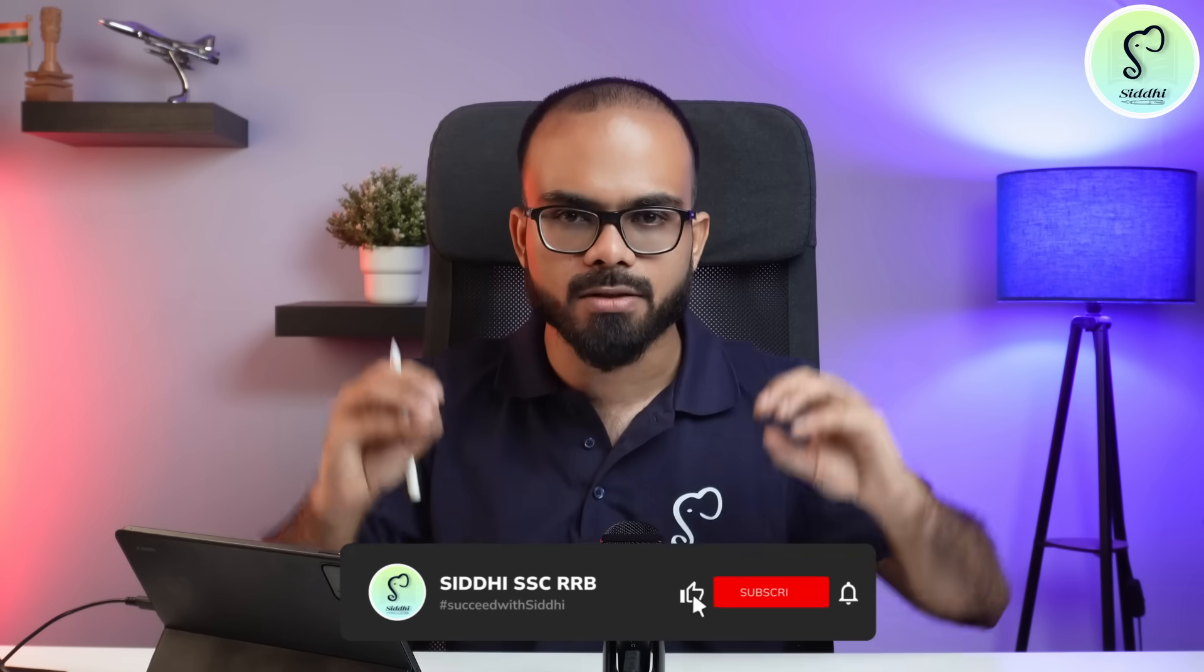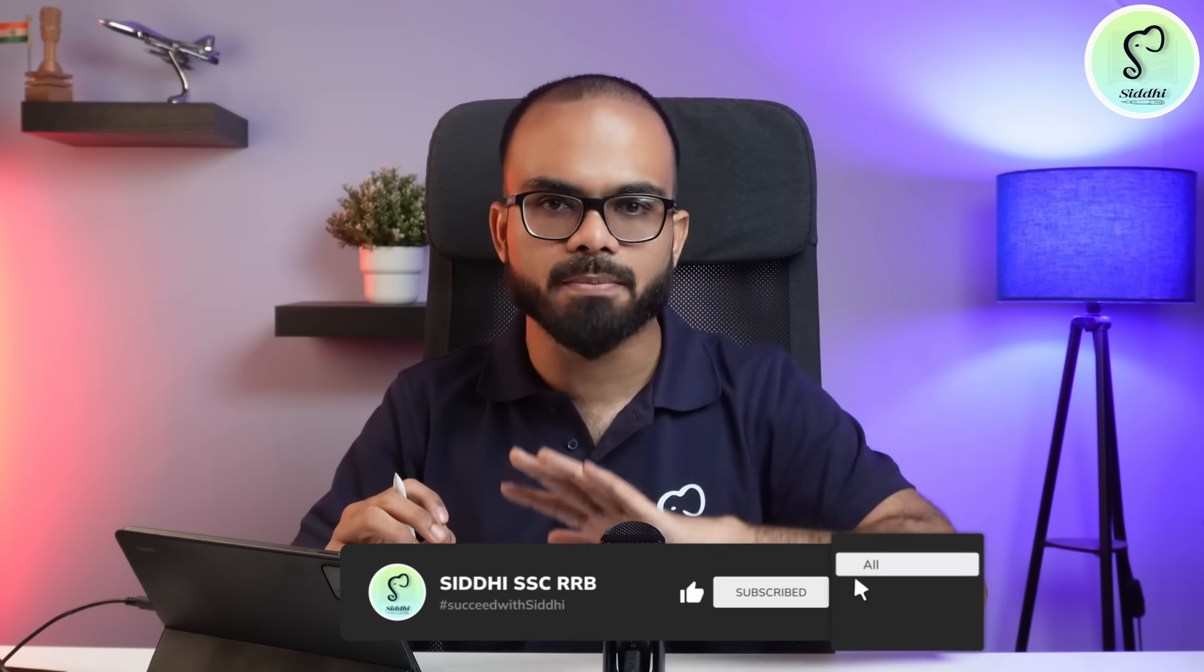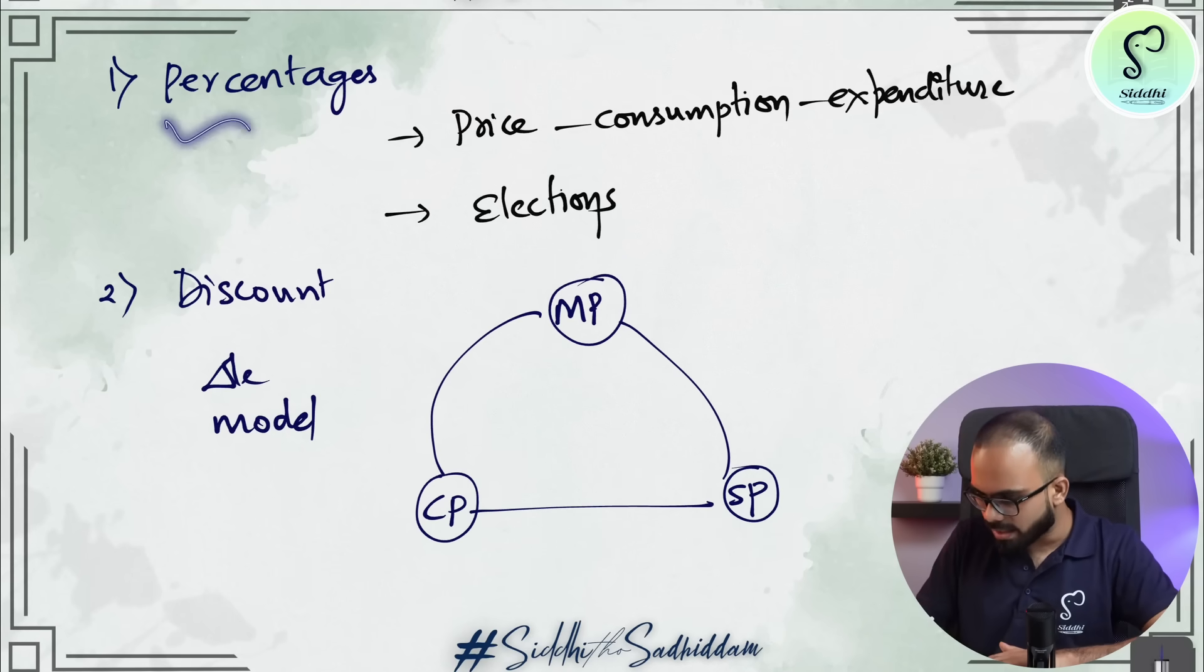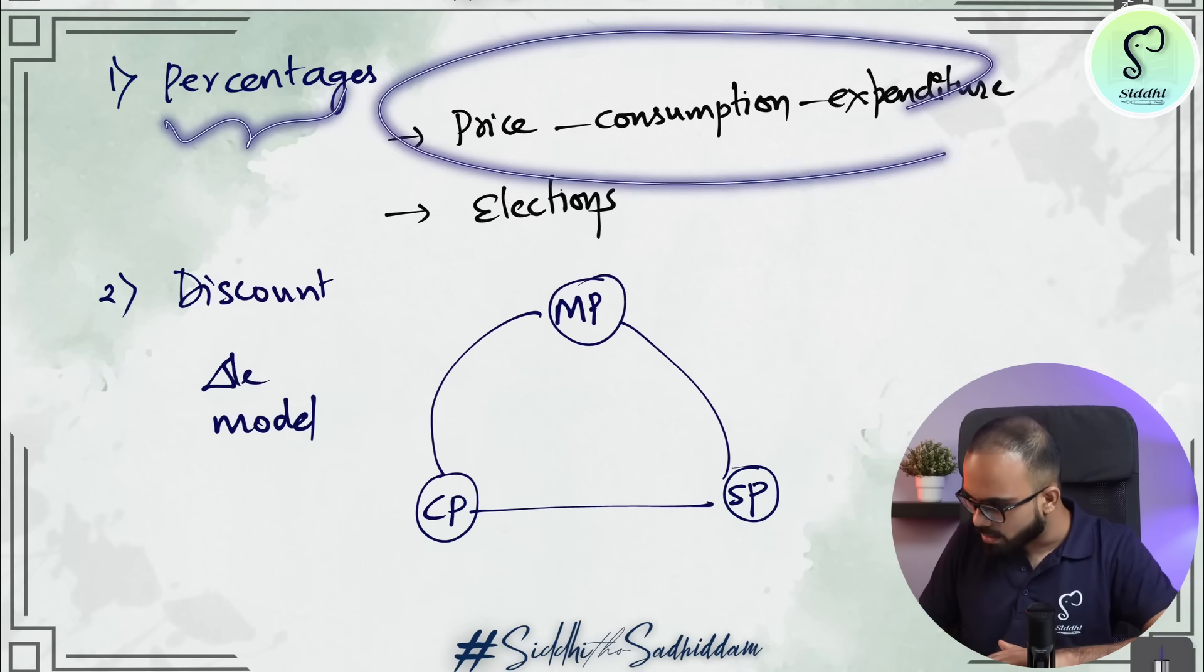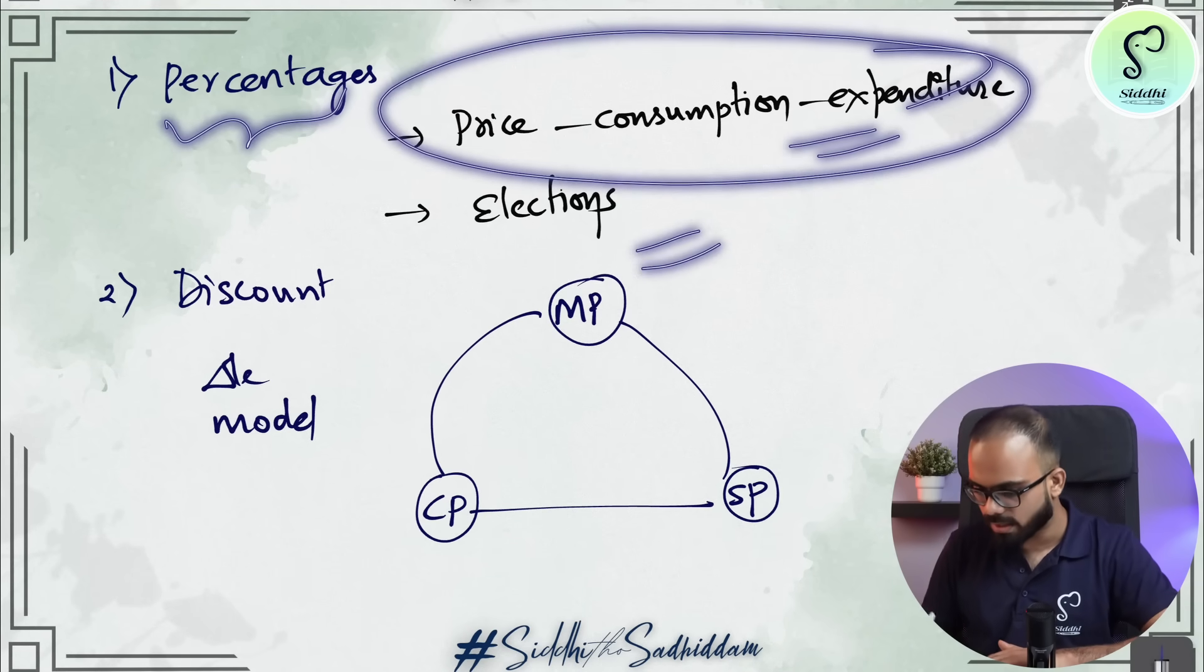There are other candidates who completed 50-60% or 70% of the syllabus. This checklist is for you. You prepare these topics and complete them first before going towards the other topics. The topics are, in percentages, price consumption expenditure questions, election questions.